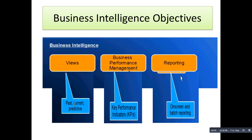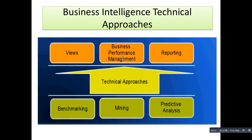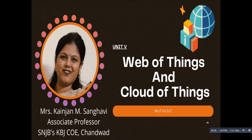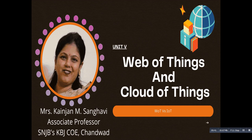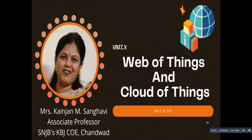To achieve these three objectives of business intelligence, there are three technical approaches: benchmarking, data mining, and predictive analysis. These are the three technical approaches with which we can achieve the objectives of business intelligence. This was all about Web of Things, portals, and business intelligence. In the next video we are going to talk about Cloud of Things — I hope you enjoyed the video, thank you so much.